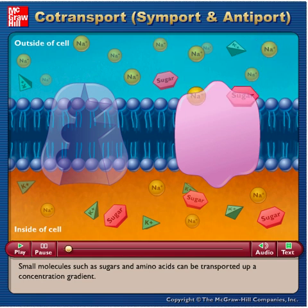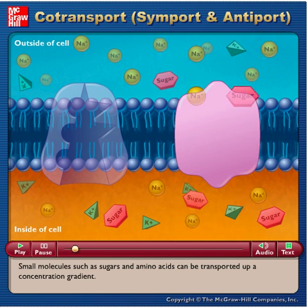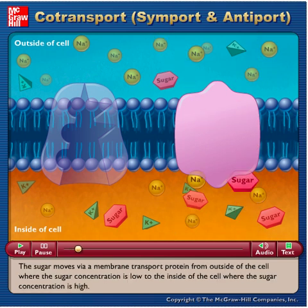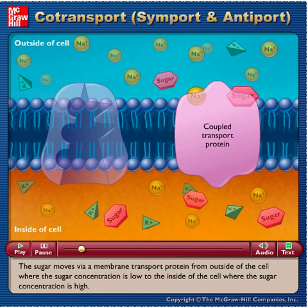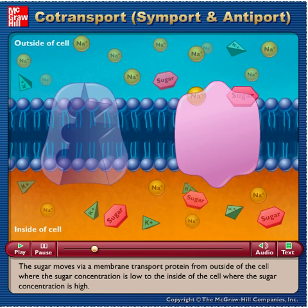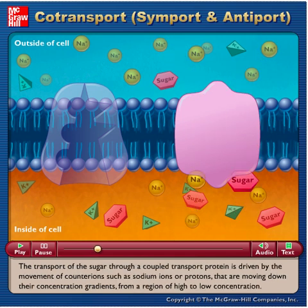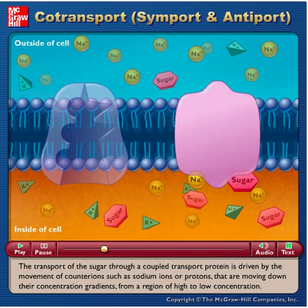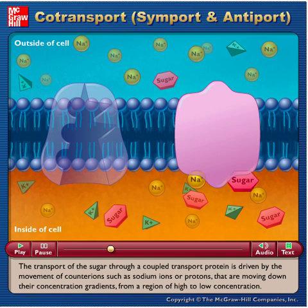Small molecules such as sugars and amino acids can be transported up a concentration gradient. The sugar moves via a membrane transport protein from outside of the cell where the sugar concentration is low to the inside of the cell where the sugar concentration is high. The transport of the sugar through a coupled transport protein is driven by the movement of counter ions such as sodium ions or protons that are moving down their concentration gradients from a region of high to low concentration.